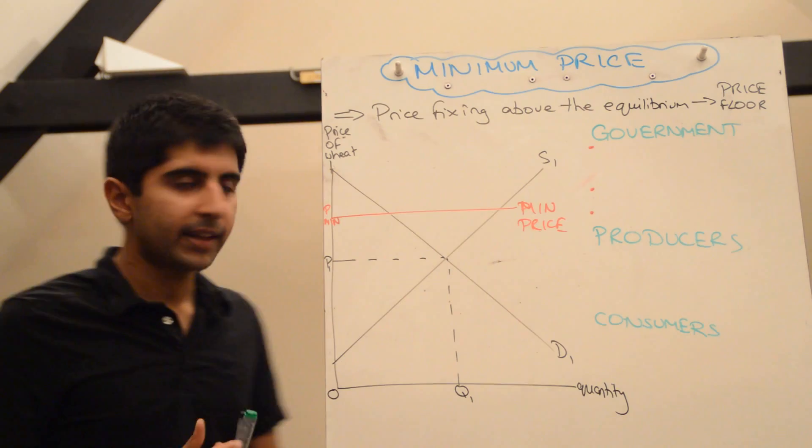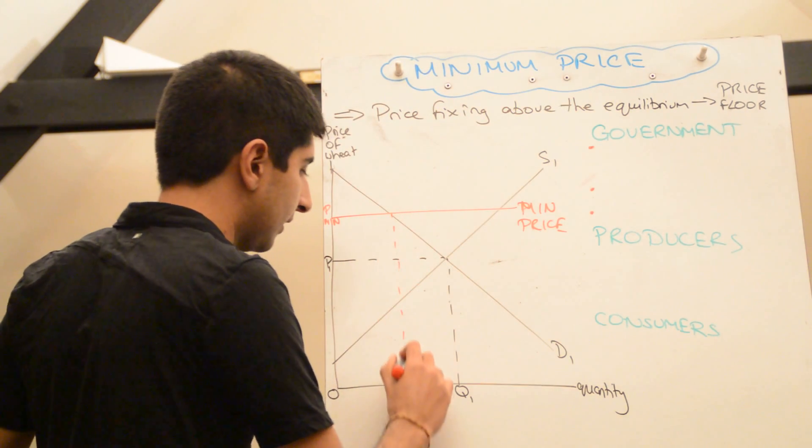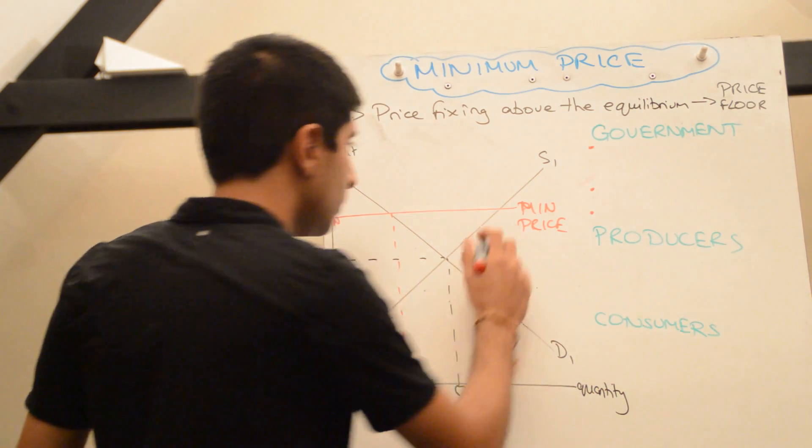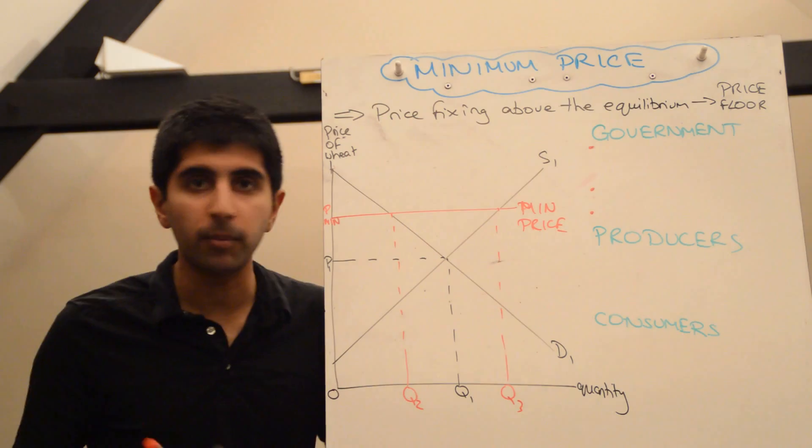Let's analyze the impact on the market. Well, at a higher price now, supply has extended and demand has contracted. So demand has contracted to Q2, supply has extended to Q3, and straight away you'll see there's a big problem here.